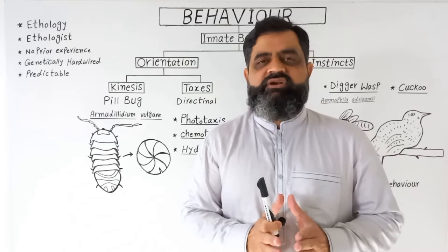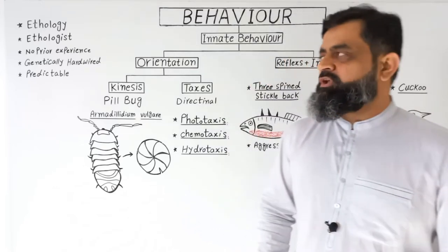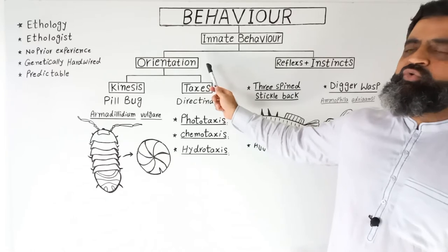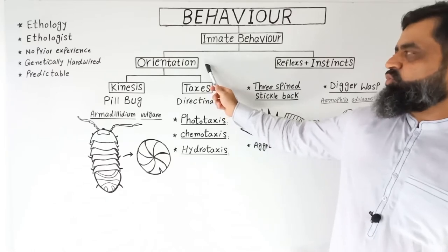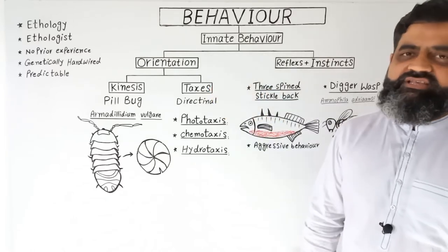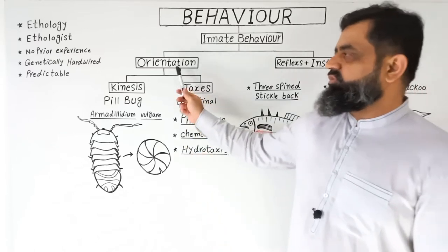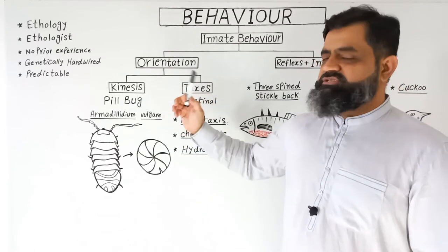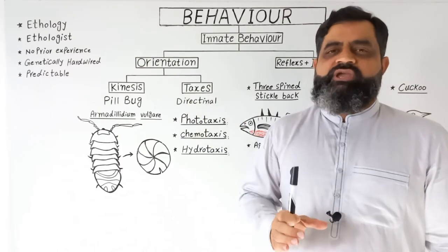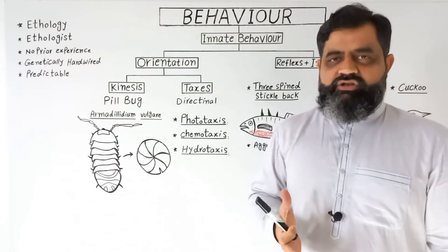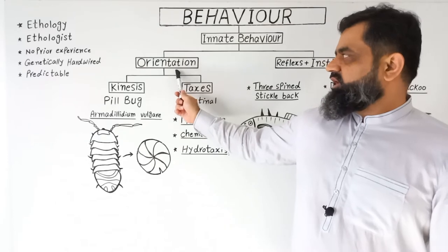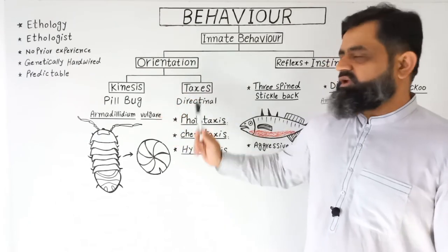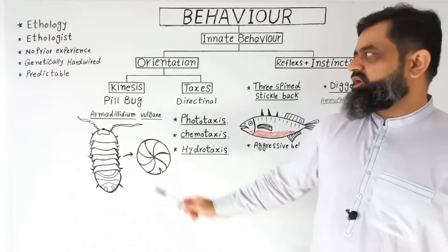Let's take some examples to discuss the different types of innate behavior. Innate behavior has been divided into two main branches: one is orientation, and the other includes reflexes and instincts. First we will discuss orientation. Orientation is a specialized type of behavior shown by certain organisms, and it can be divided into two types: kinesis and taxis.